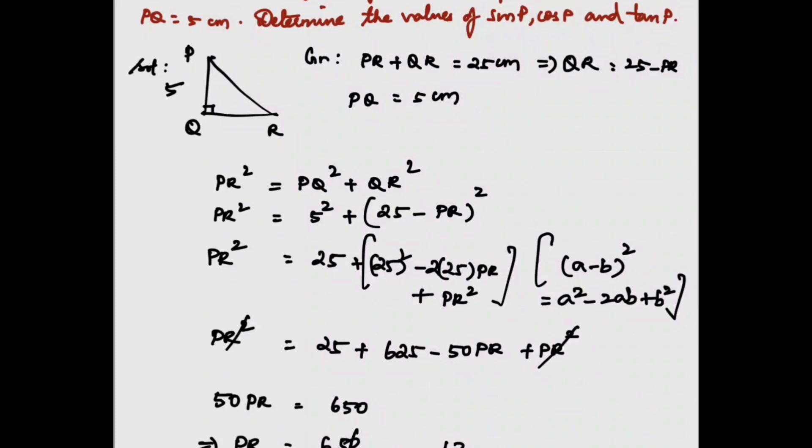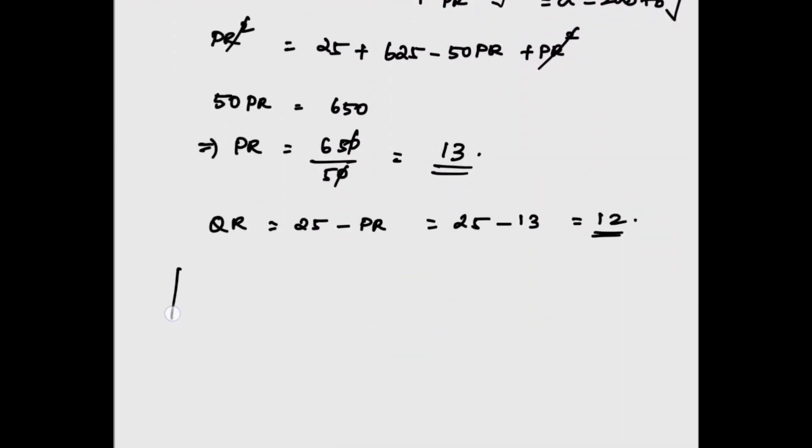The question is we have to find sin P, cos P, and tan P. We have QR = 12 cm, PR = 13 cm, and PQ = 5 cm. Sin P = opposite/hypotenuse = QR/PR = 12/13.